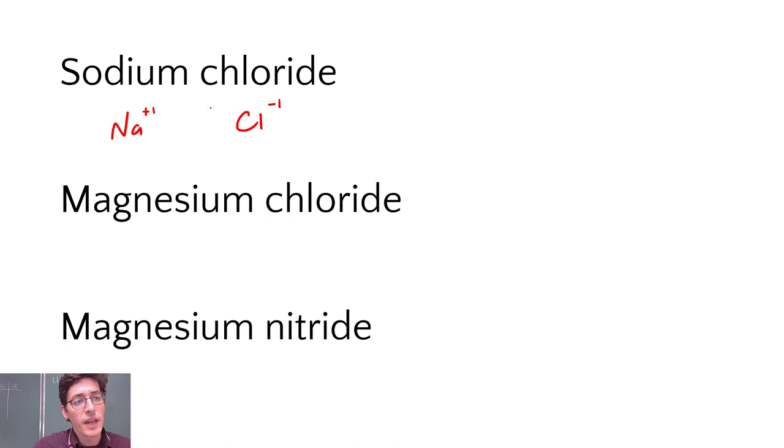Now these charges have to add up to zero. So I've got a plus one sodium plus a negative one chlorine. So our formula for sodium chloride is just NaCl because that plus one cancels out my negative one charge. This is a neutral compound. So that's sodium chloride.